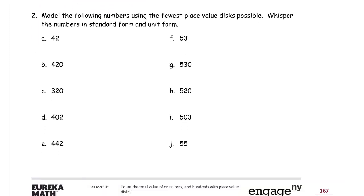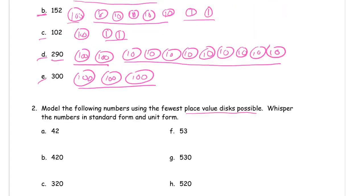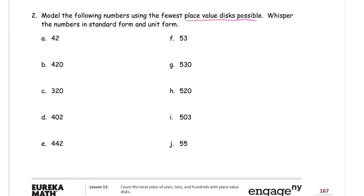Number 2, model the following numbers using the fewest place value disks possible. Whisper the numbers in standard form and unit form. It's the same thing, but with just more numbers. So this is going to take 4 tens and 2 ones. To say this number in standard form, it's 42. And in unit form, it's 4 tens, 2 ones.